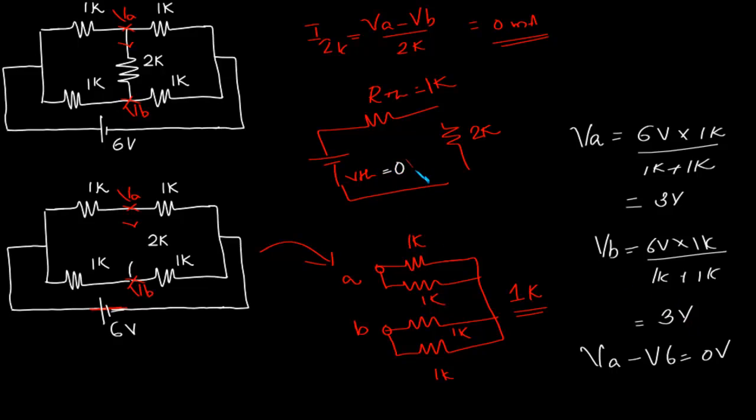So we have 0 volts and an internal resistance of 1k. So what will be the current through this combination? That is 0 by some resistance value, say R dash. So the current through 2k resistance will be 0 amps.